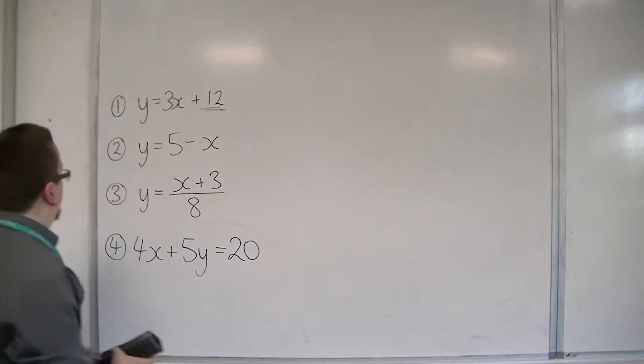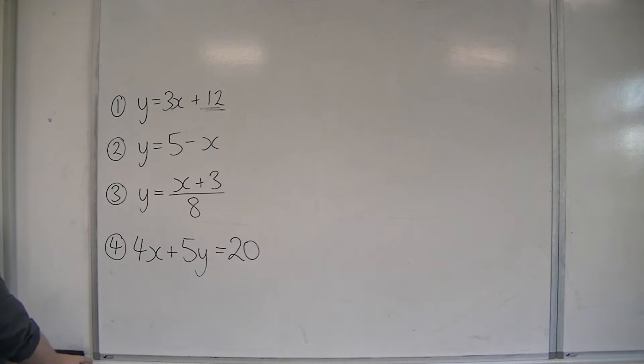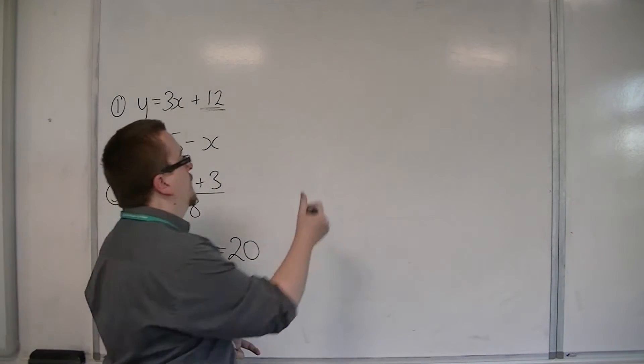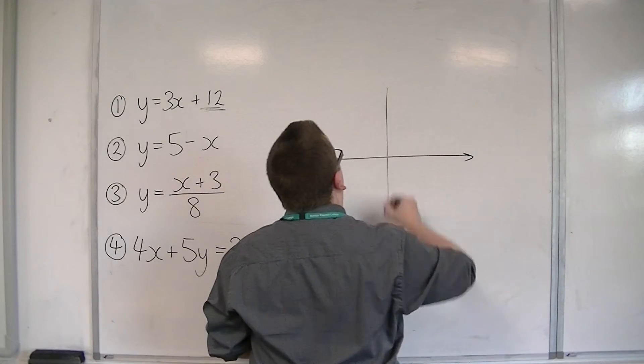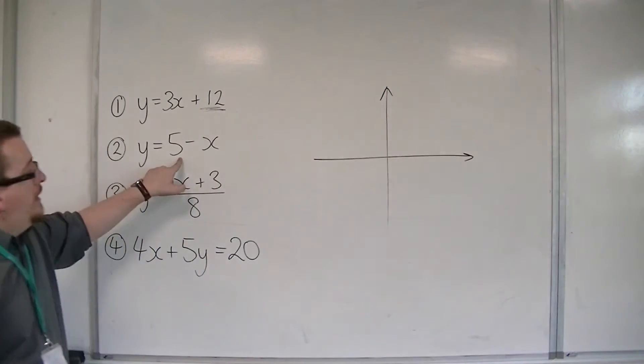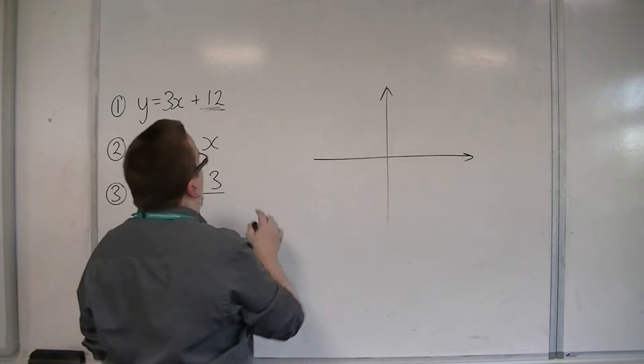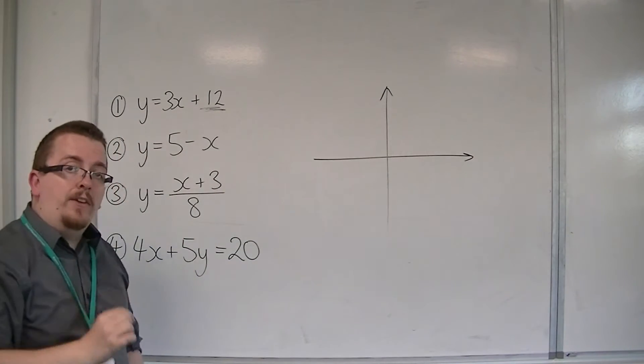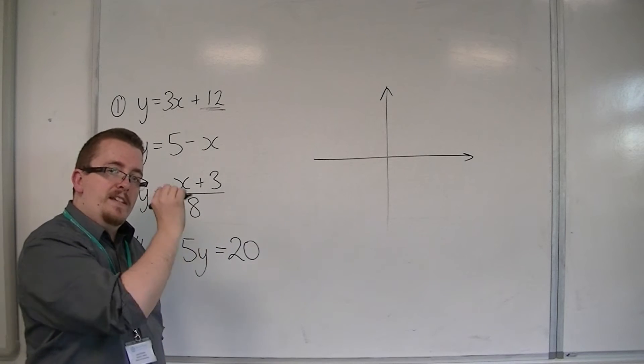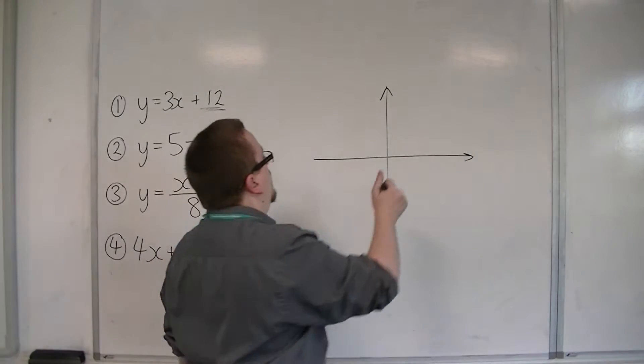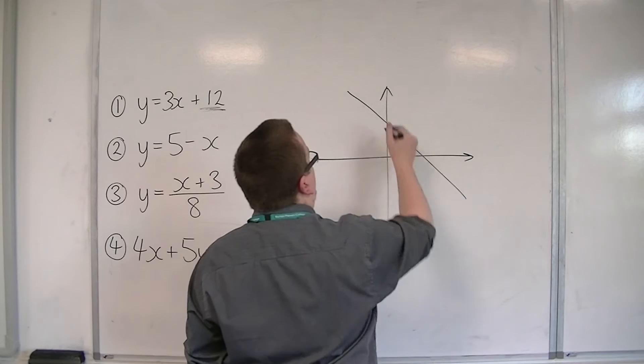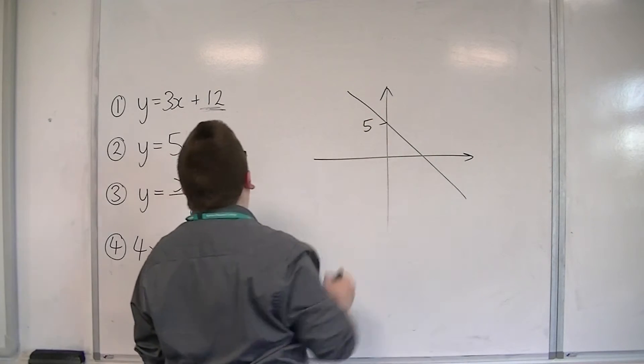Let's look at the next one. Number 2, y is equal to 5 minus x. So 5 is where it's crossing the y-axis, because that's when x is 0. So y is 5. And because we've got minus x, the gradient of the line is negative, minus 1. So it's a line that's going to look something like this, going through 5 on the y-axis.